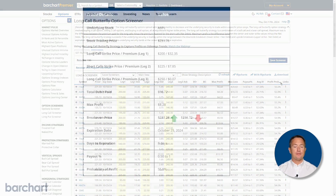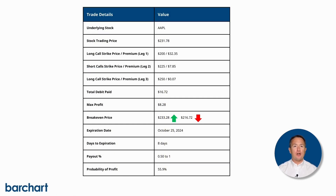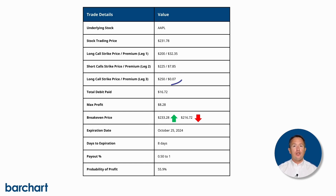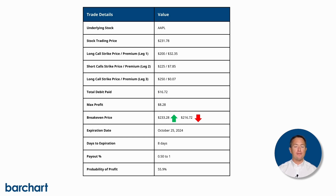Let's move on to the trade example. According to the screener, you can set up a long call butterfly spread on Apple, with the stock currently trading at $231.78 at the time of recording. You first buy the $200 strike call for your lower long call, paying a premium of $32.35 per share. Then you sell two $225 strike calls, collecting $7.85 per share each. Finally, you buy the $250 strike call, paying $0.07 per share. This setup results in a net debit of $16.72 per share, or $1,672 per contract. Your maximum profit on the trade is $8.28 per share. All options expire on October 25th, with 8 days remaining until expiration.